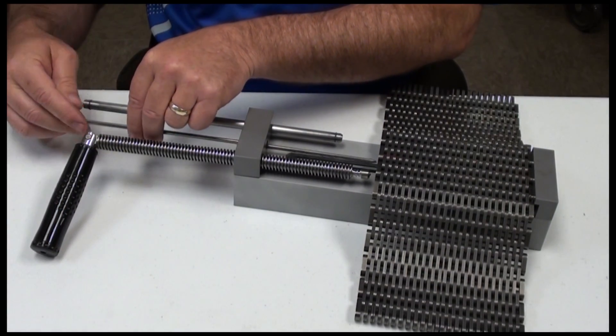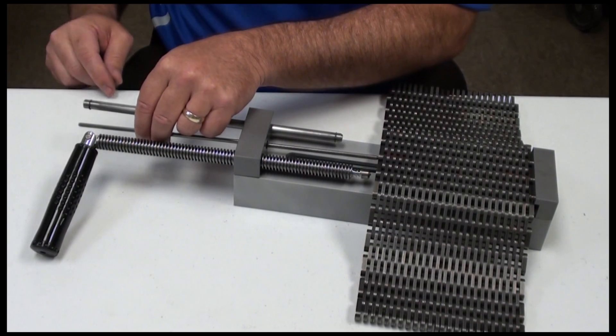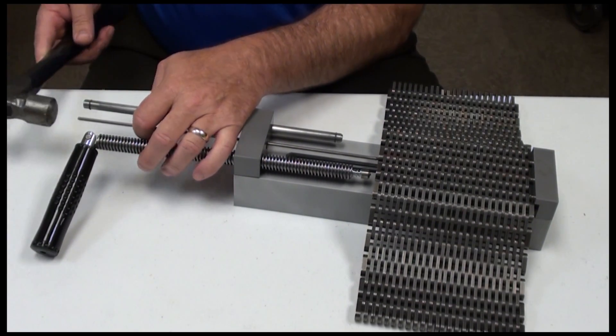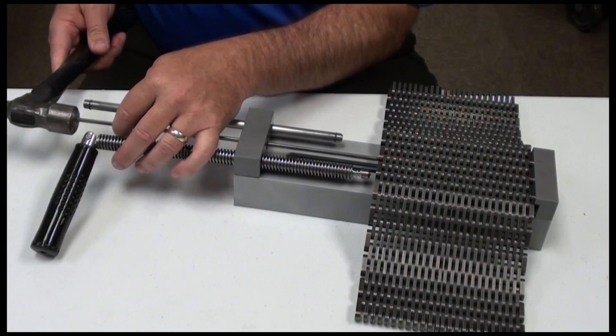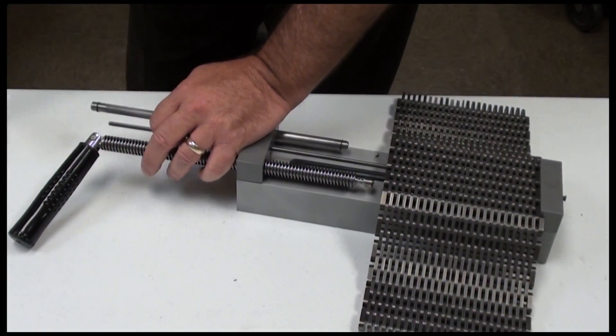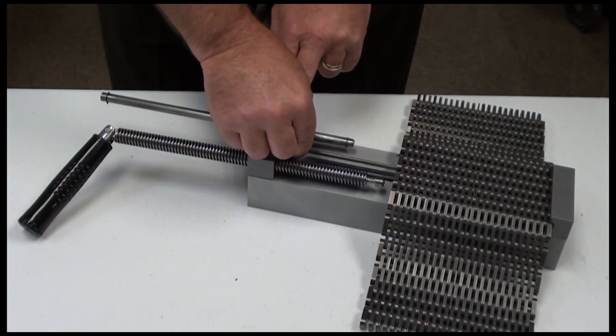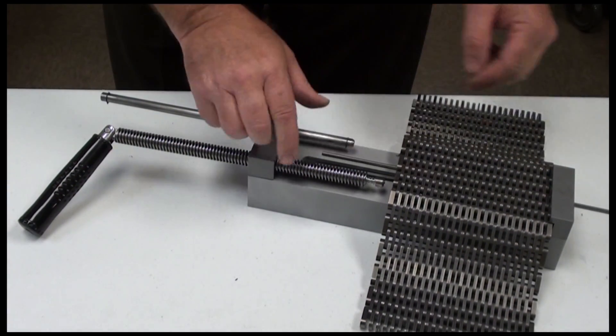Use your hammer to tap the assembly pin into the chain so that the chain pin is pushed out the back side of the chain. Remove the chain pin and the assembly pin.